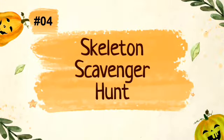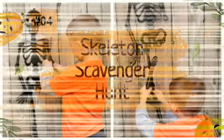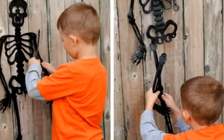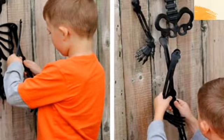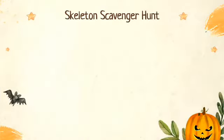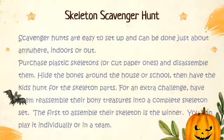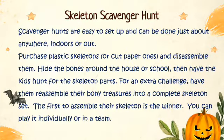Idea four is skeleton scavenger hunt. Scavenger hunts are easy to set up and can be done just about anywhere, indoors or out. Purchase plastic skeletons or cut paper ones and disassemble them. Hide the bones around the house or school, then have the kids hunt for the skeleton parts. For an extra challenge, have them reassemble their bony treasures into a complete skeleton. The first to assemble their skeleton is the winner.